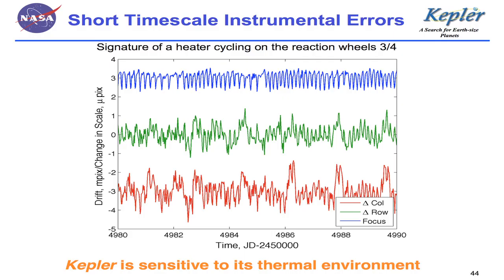Kepler is an exquisitely sensitive photometer with an objective or a goal of achieving 20 part per million precision in the photometry over a six and a half hour timescale. And that has proven to be challenging in part because the instrument is so gosh darn sensitive. In fact, very small changes in the thermal state of the telescope and the spacecraft evince themselves in the data themselves.